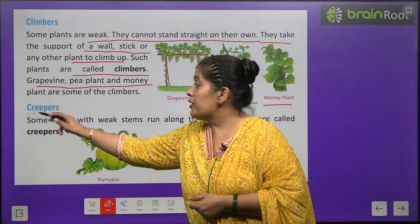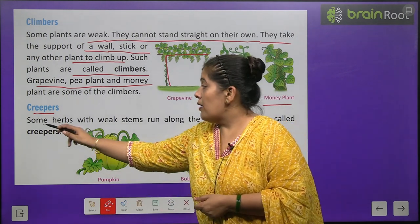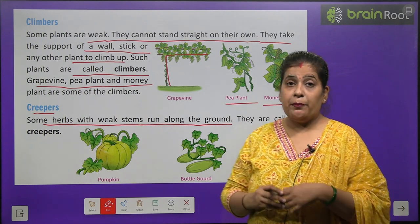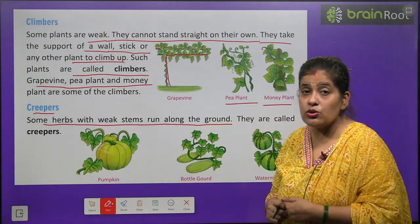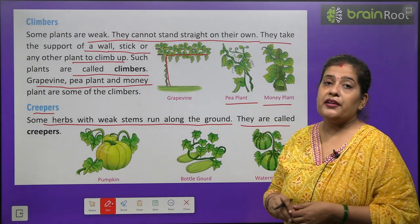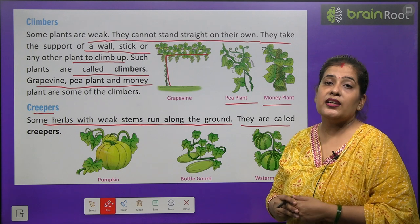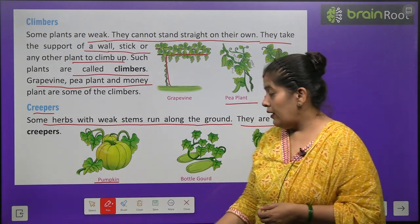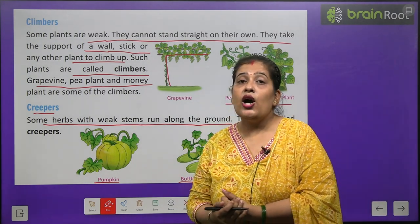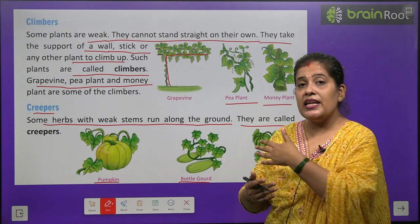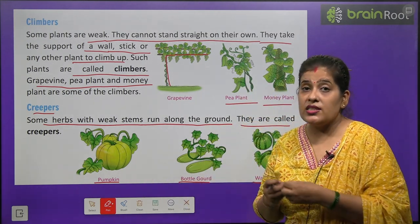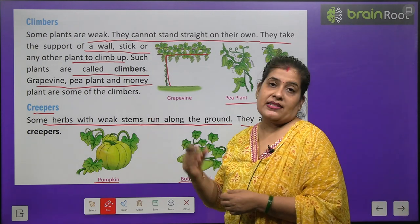Now we will learn about creepers. Some plants with weak stems run along the ground — vo ped paudhe jinki tana bahut nazuk hota hai, yeh zameen par failte hain. They are called creepers — unhe hum creepers kehte hain. For example, pumpkin, bottle gourd, and watermelon — yani ghiya ki bel, tarbuj ki bel, aur pethe ki bel. Yeh sab zameen par hi failti hain aur bahut weak hoti hain, isliye hum inhe creepers kehte hain.